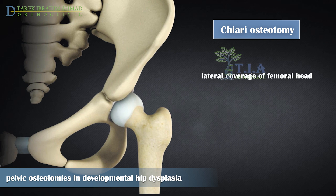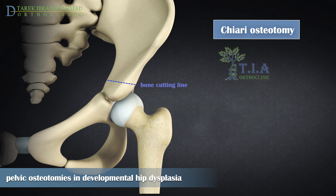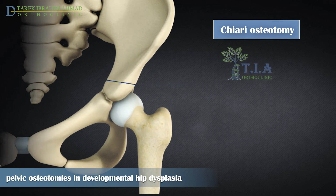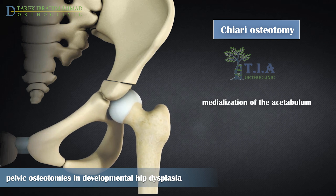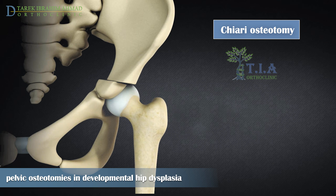Chiari osteotomy is a salvage procedure that aims mainly to achieve lateral coverage of the femoral head in adolescents with acetabular dysplasia when concentric reduction is not possible. The level of the pelvic osteotomy is crucial — it should be less than five millimeters from the joint space, directed with a cephalic inclination of 10 degrees toward the sacroiliac joint. It is a single pericapsular osteotomy through the iliac bone with medialization of the acetabulum and hip joint to improve posterior and lateral coverage; the ilium forms a shelf over the dysplastic subluxated hip.